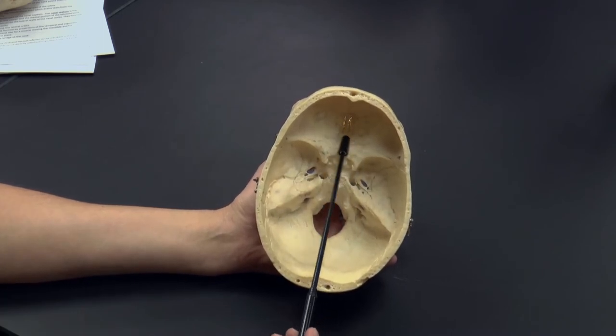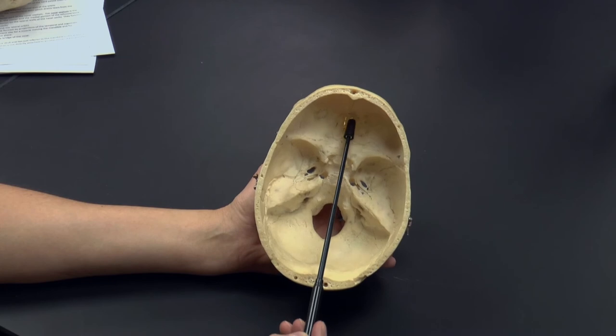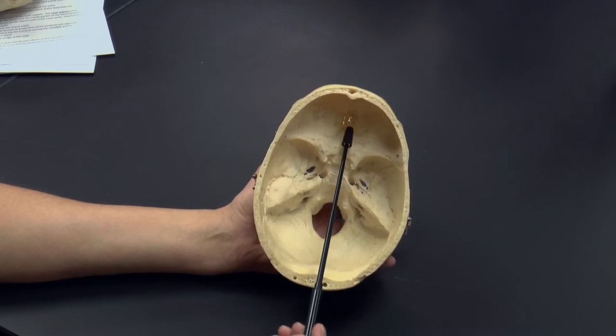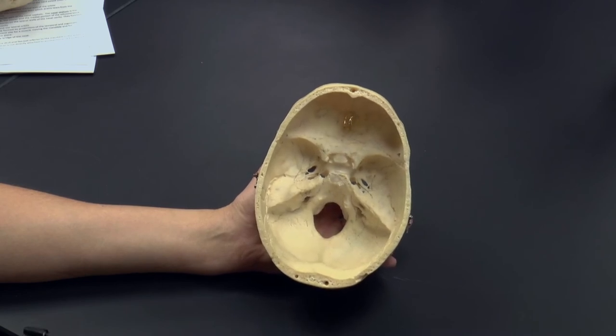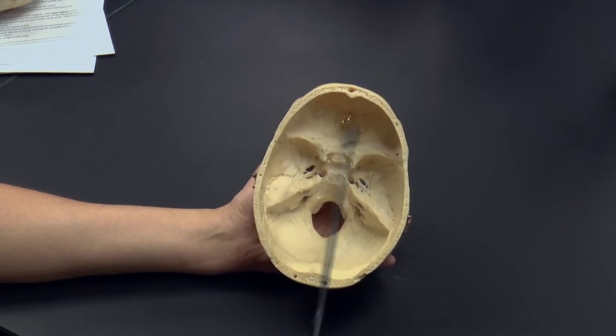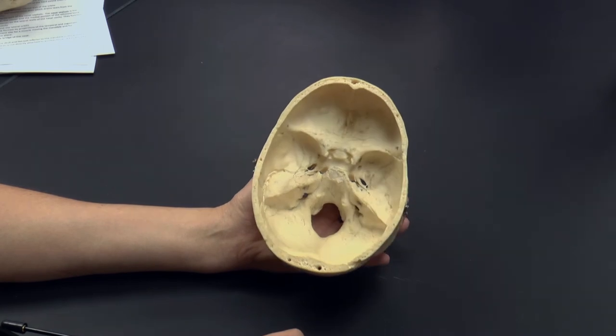So again, the parts of our ethmoid bone that we can see from the internal view of our skull is our crista galli, this very midline structure that sticks up. The flat part surrounding it is the cribriform plate. And then the holes in the cribriform plate are called the olfactory foramina.